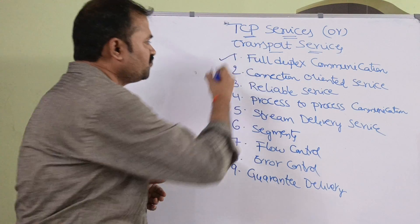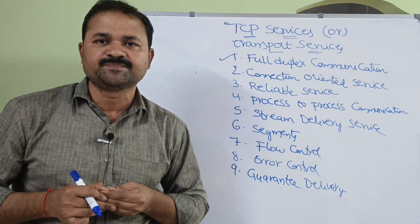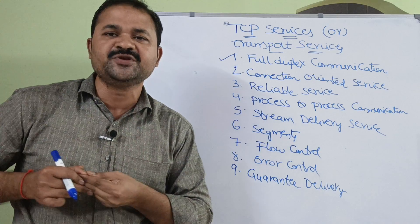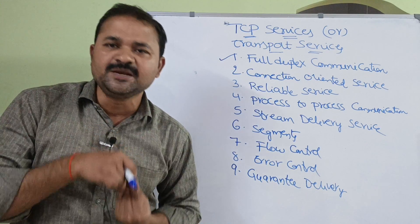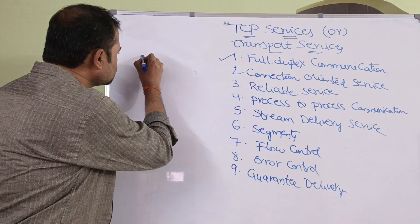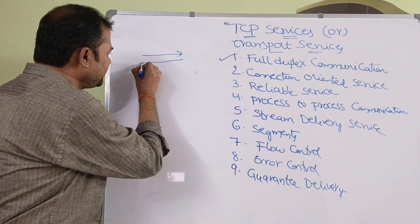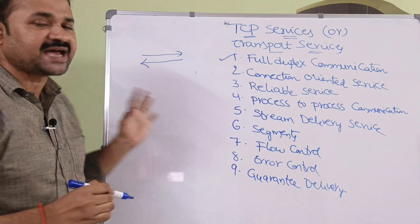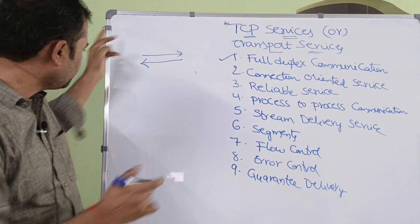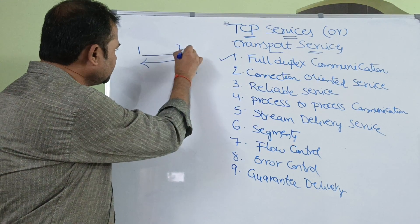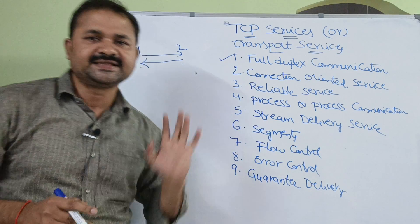The first one is full duplex communication. TCP is a full duplex communication protocol, meaning data will be transferred from source to destination as well as from destination to source simultaneously. So data will be transferred from host 1 to host 2 as well as from host 2 to host 1 at the same time.